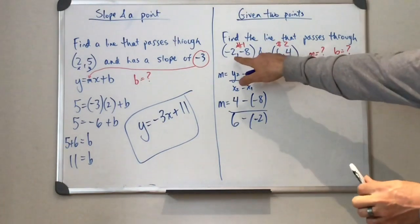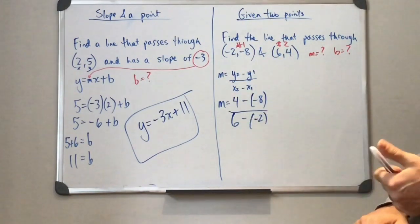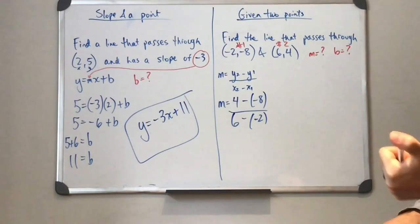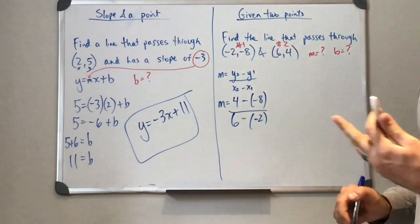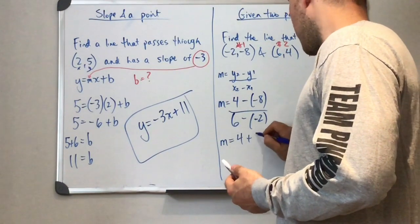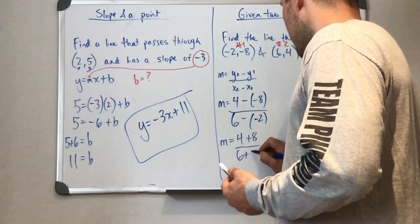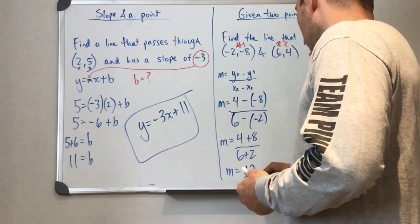So we have four minus negative eight over six minus negative two. Okay. So we've got to be careful. When we're subtracting a negative, we have to show both of those because we know that these two signs together, subtracting a negative really means adding. So we have four plus eight over six plus two.